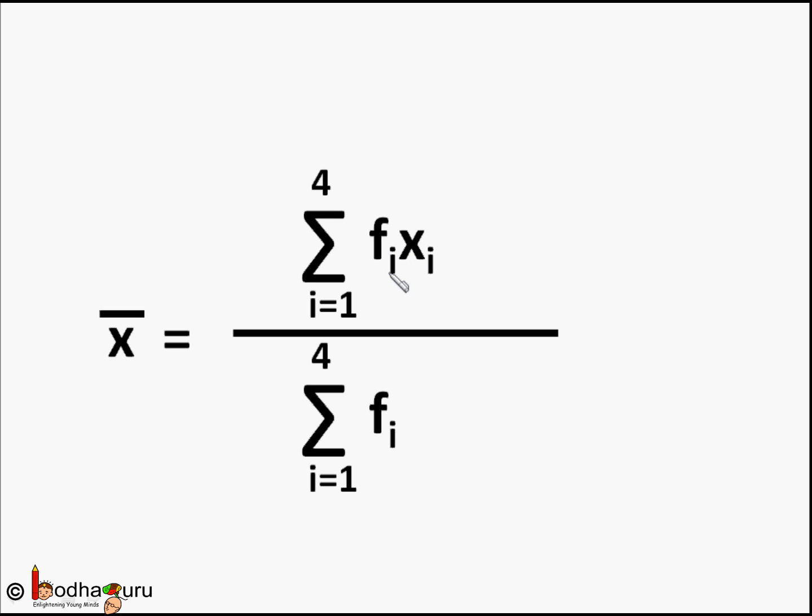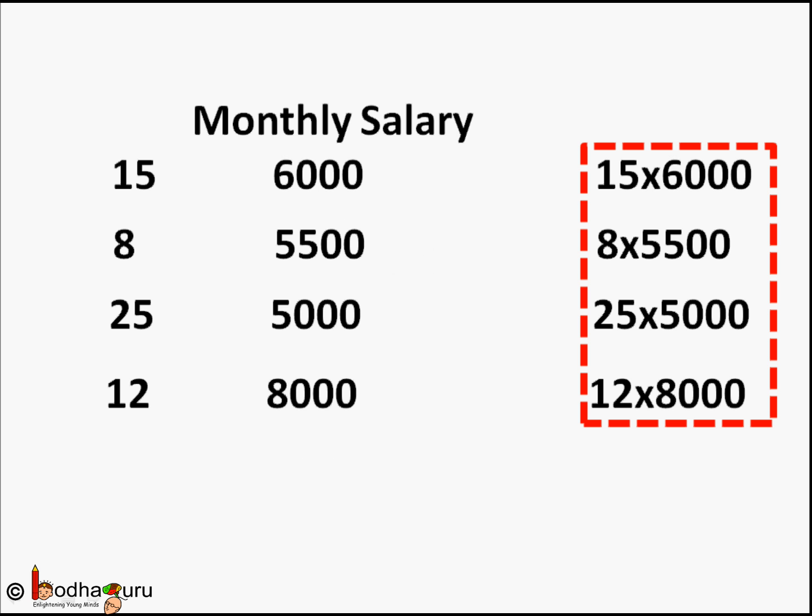Here xi is the value in observation like monthly salary and fi is the frequency of the data, how many times that number appeared during observation, like how many people were earning that salary. For example, 15 people earn 6000 Rs. a month means x1 will be 6000 and f1 will be 15.